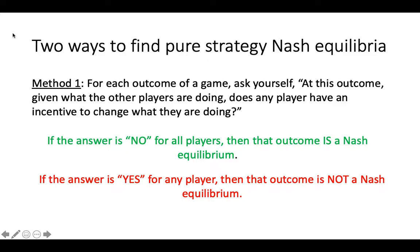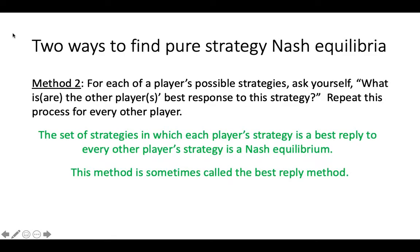Do not assume just because you have found one Equilibrium in a game that you are done. We know that every game has at least one Nash Equilibrium, but many games have more than one. The next method is to go through a player's possible strategies and for each one, ask yourself what is the other player's best reply to this strategy. Then repeat the process for the other players. Using this method, you will uncover the set of strategies in which each player's strategy is a best reply to every other player's strategy — the Nash Equilibria.